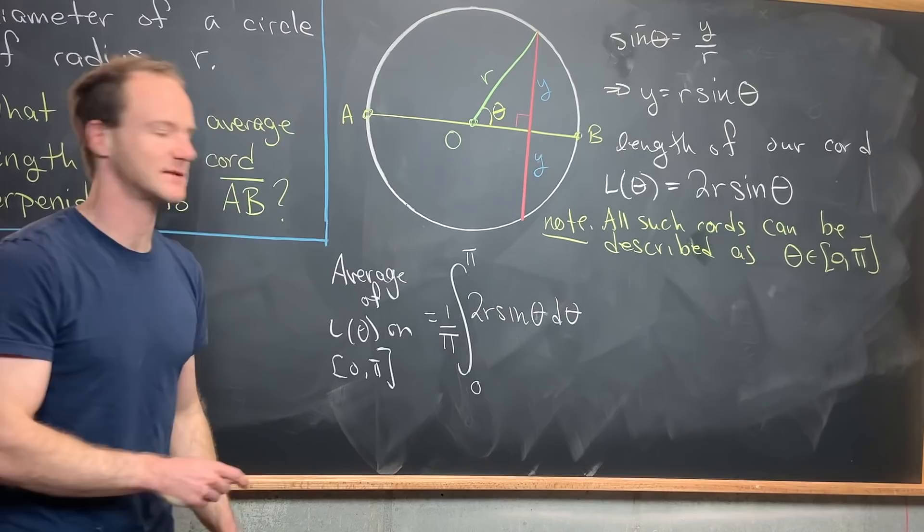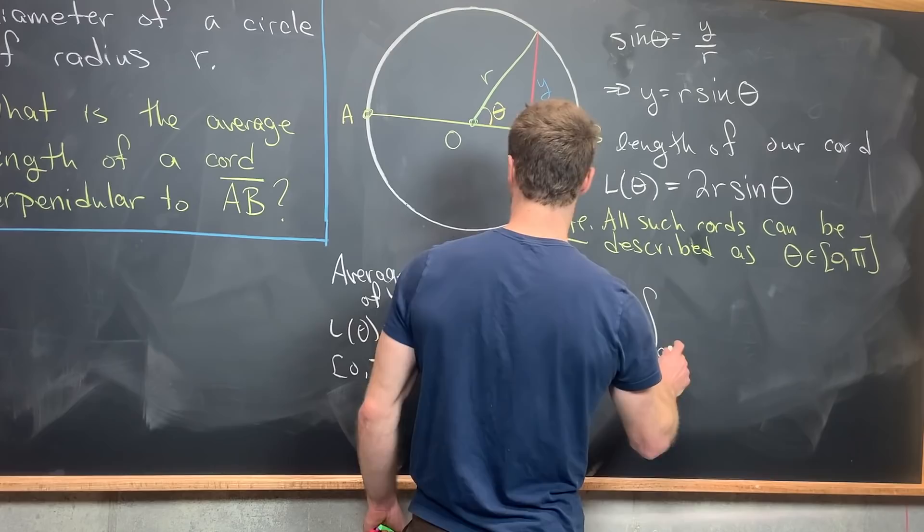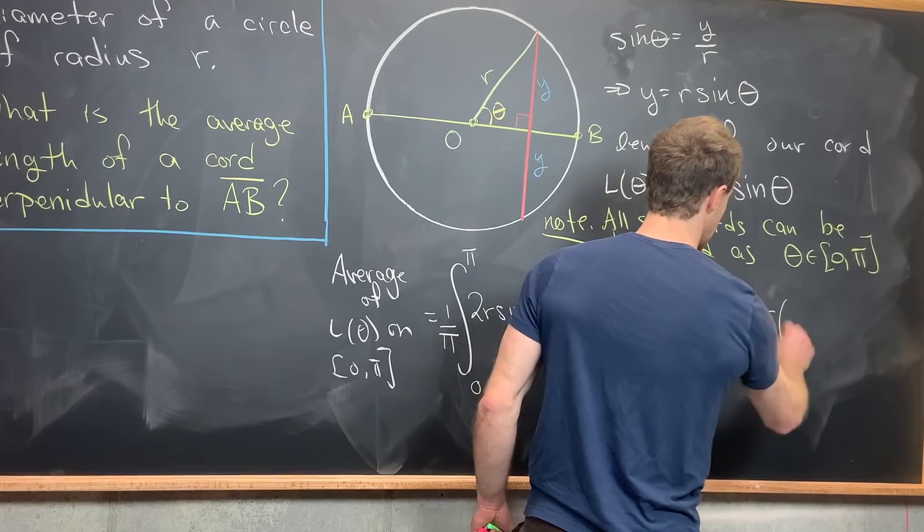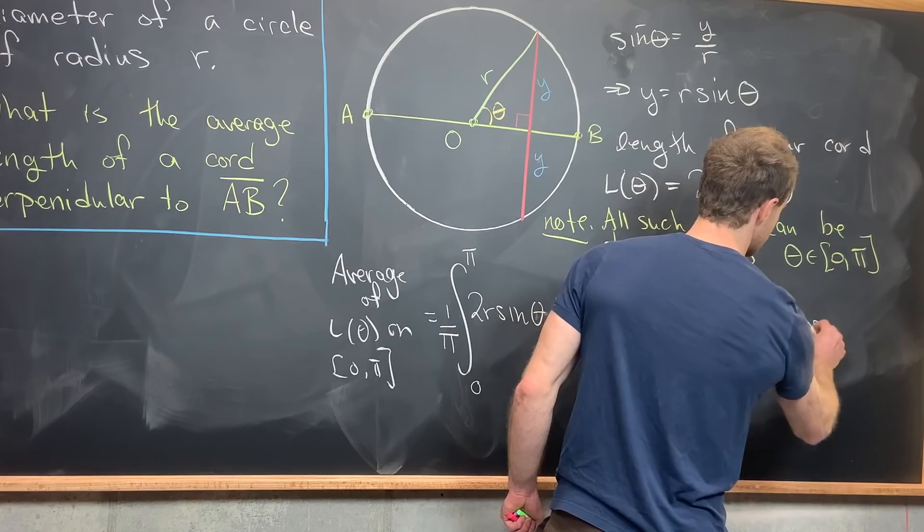But now maybe we can take some constants out of that. That's going to give us 2R over pi, and then the integral from 0 to pi of sine theta dθ. We can go ahead and take the antiderivative of that. That's going to give us 2R over pi, and then the antiderivative of sine theta is cosine theta. So we have minus cosine theta. I should have said minus cosine theta. We're going to evaluate that from 0 to pi.